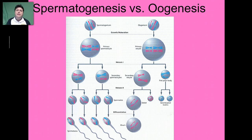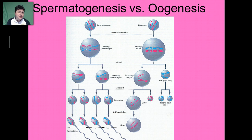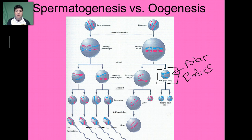In humans, typically only one mature egg is produced each month, so the production of an egg by meiosis is slightly different from the production of sperm. During spermatogenesis, the formation of sperm, we end up with four haploid sperm cells. But in oogenesis, with each division there's an uneven distribution of cytoplasm, producing what are known as polar bodies. These polar bodies are unusable and must be discarded. So at the end of meiosis, we end up with one mature egg cell and three unusable polar bodies.